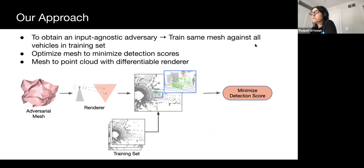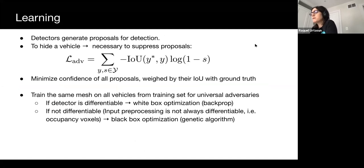Towards this goal, we use a differentiable renderer to bridge the gap between the mesh representing the physical object and what the sensor sees — a point cloud — and optimize an adversarial objective targeted at minimizing detection scores to hide vehicles. To minimize detection scores, our adversarial loss minimizes the confidence of all bounding box proposals, weighted by the intersection over union with the ground truth to prioritize high-quality proposals. We mainly rely on black-box optimization as it is applicable to all models. Even when gradients are available, white-box attacks are of similar strength since black-box optimization works well for the low-dimensional mesh parameterization.